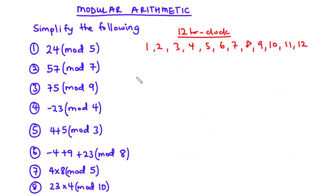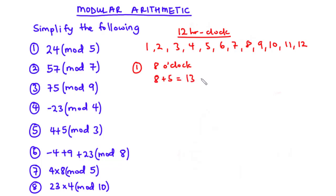Let's consider two cases. Case one: assuming it is 8 o'clock now, what will be the time in five hours? We are going to add 5 to 8, so we have 8 plus 5 which is equal to 13 — we say that it is 13 o'clock. But the clock does not display 13 o'clock; it displays 1 o'clock.